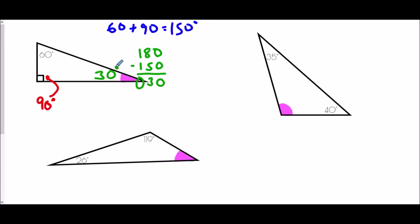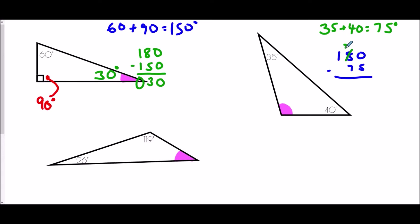The next triangle has a 35 degree angle and a 40 degree angle. First, 35 plus 40 gives me 75 degrees. To find the missing angle I subtract from 180: 180 take away 75, and I need to borrow, which leaves me with 105. So the missing angle here is 105 degrees.